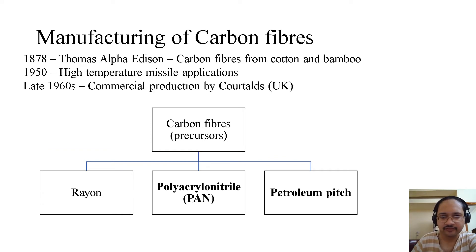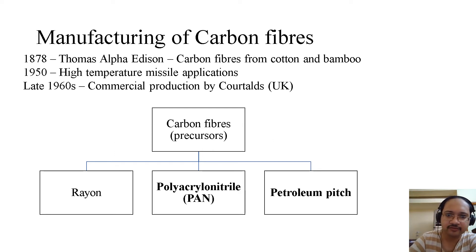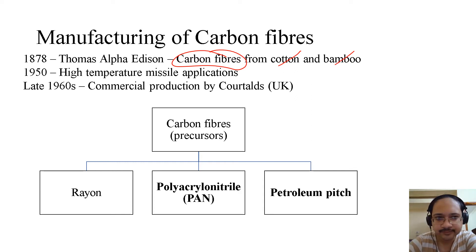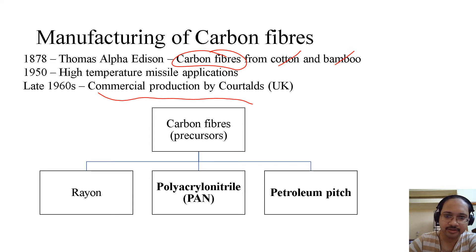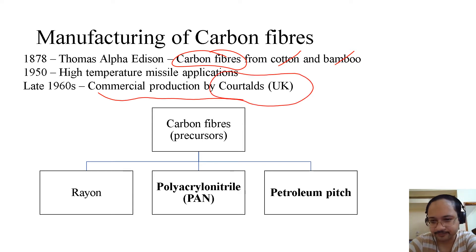Coming to the manufacturing of carbon fibers: in 1878, Thomas Alva Edison manufactured carbon fibers from cotton and bamboo. In 1950, high-temperature missile applications emerged using carbon fibers. In the late 1960s, commercial production started by Courtaulds, UK.